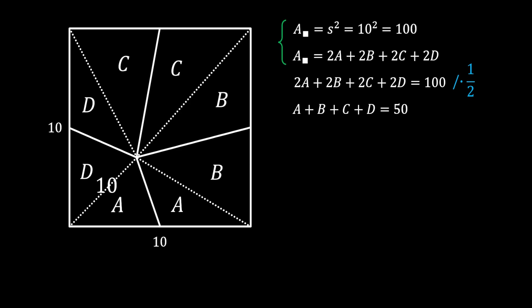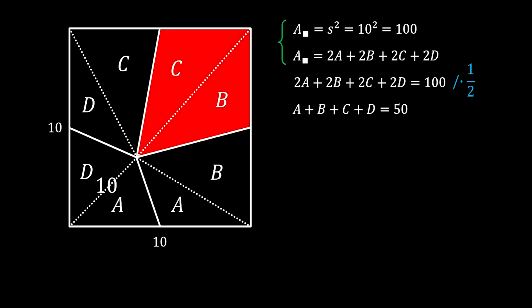Now, remember, we are looking for the area of the quadrilateral on the top right, and this quadrilateral consists out of areas B and C, so this is our wanted area.